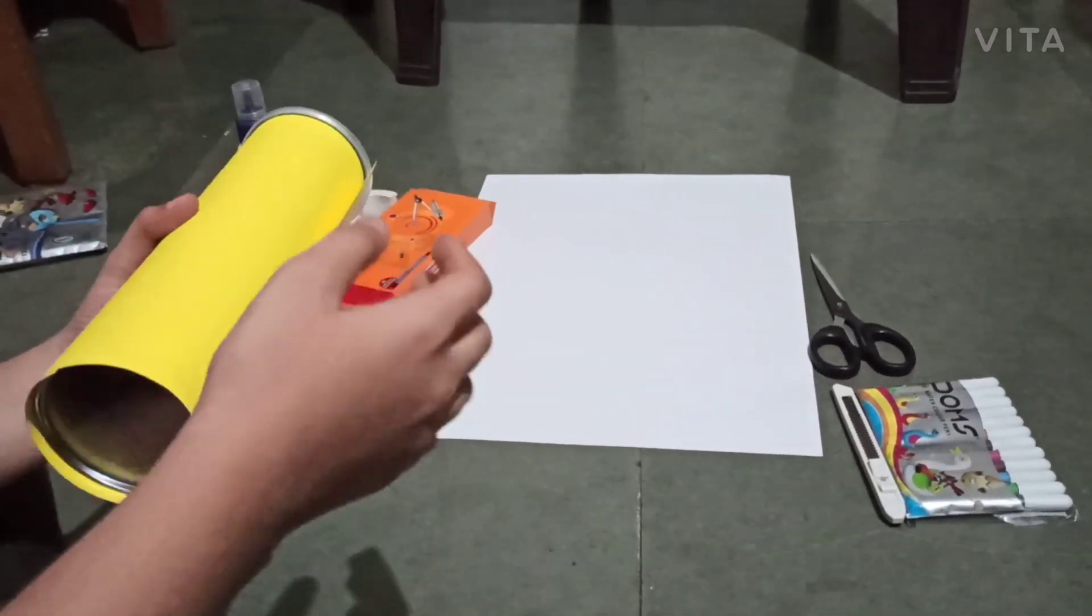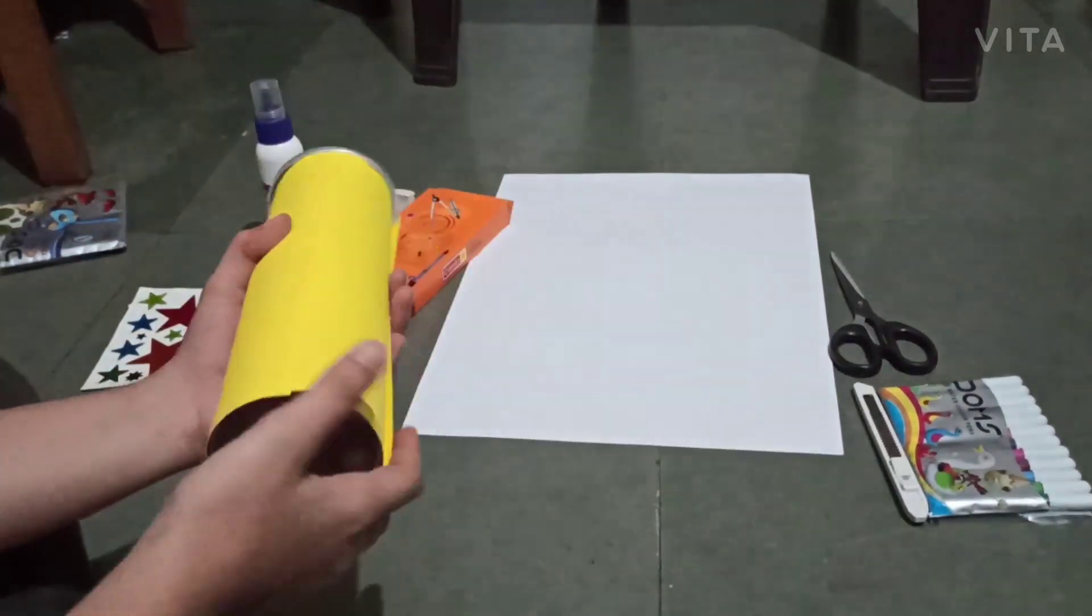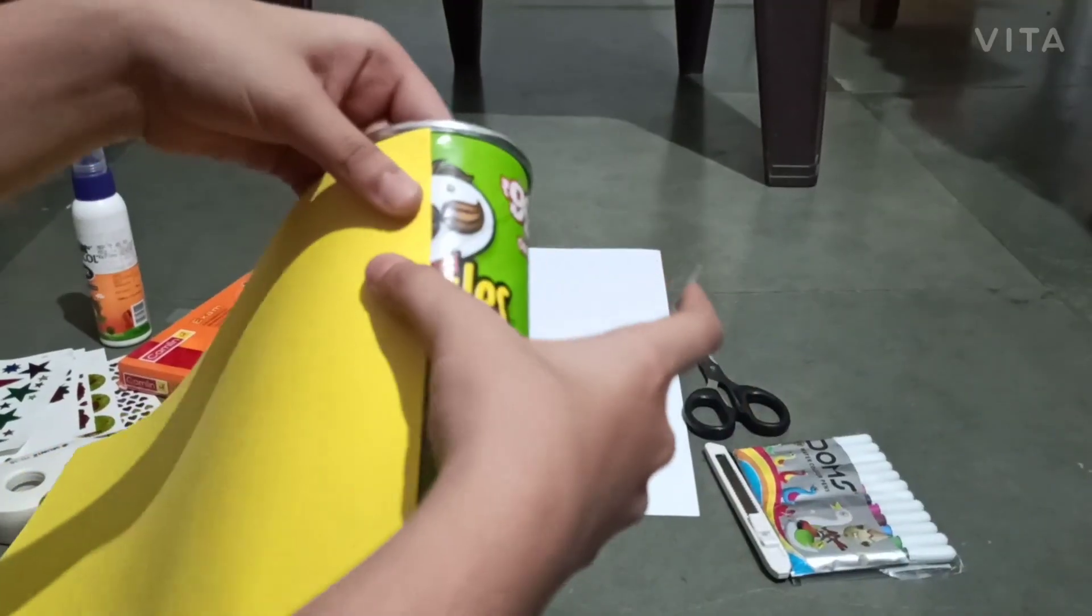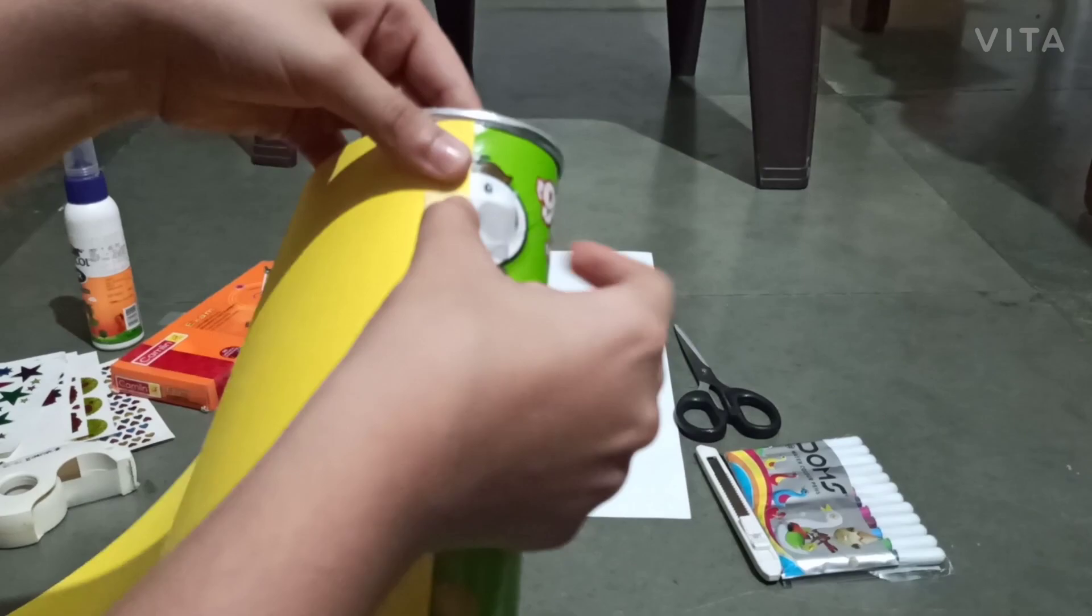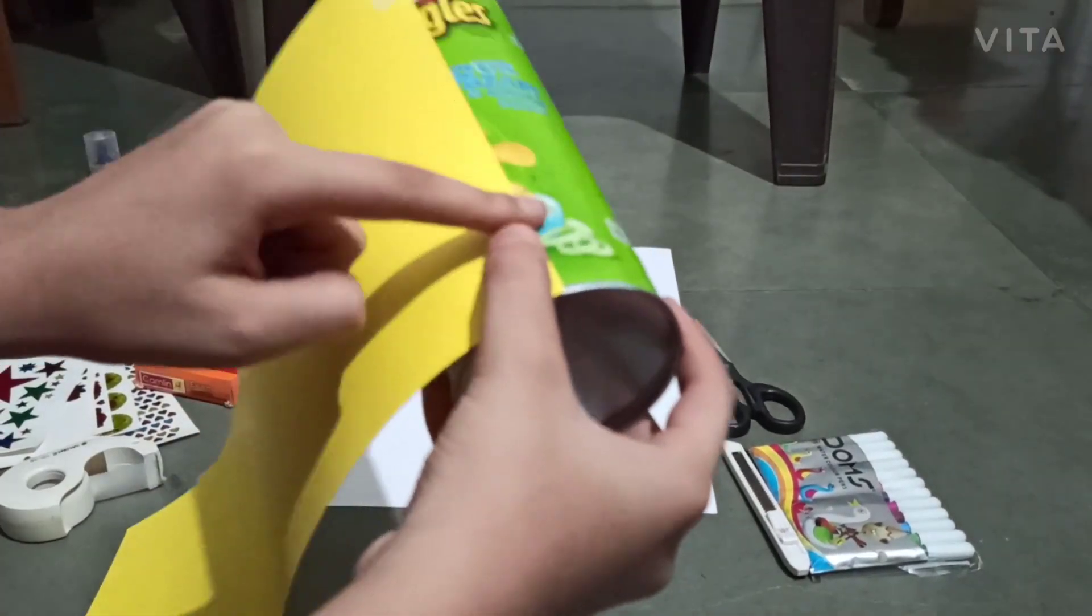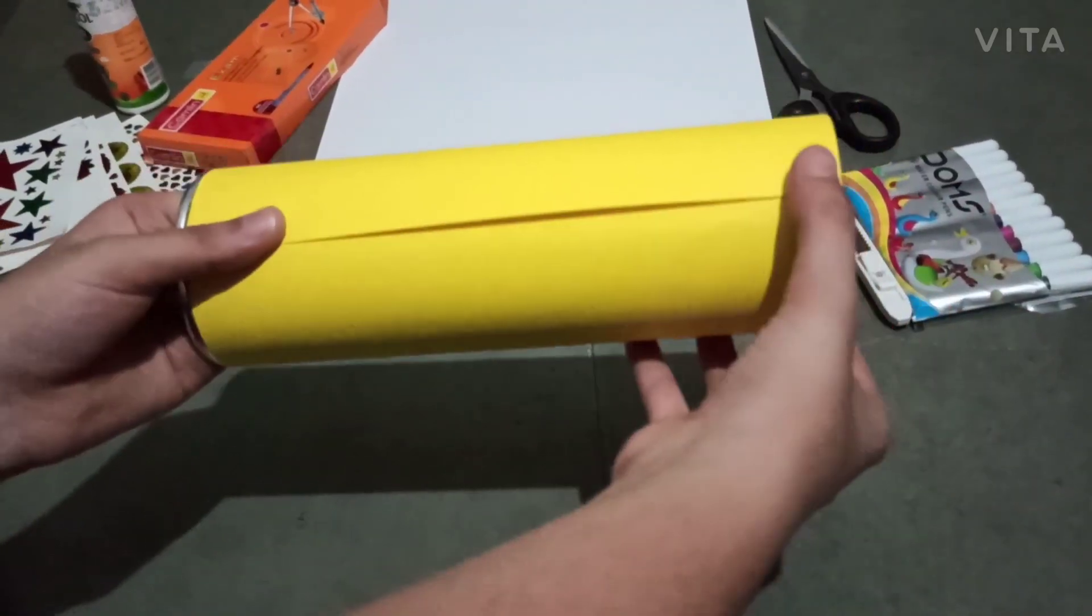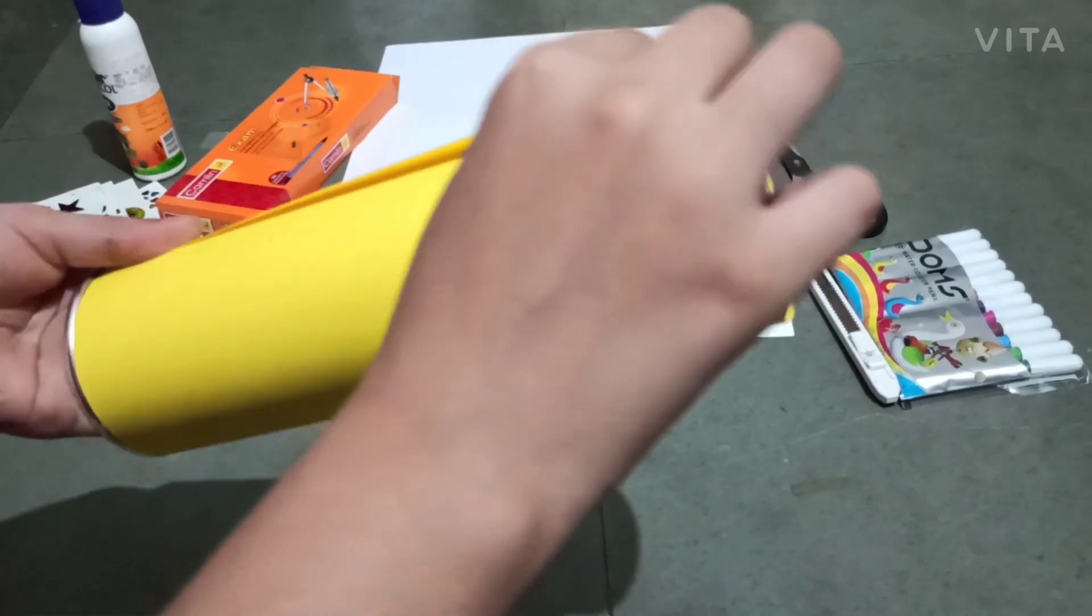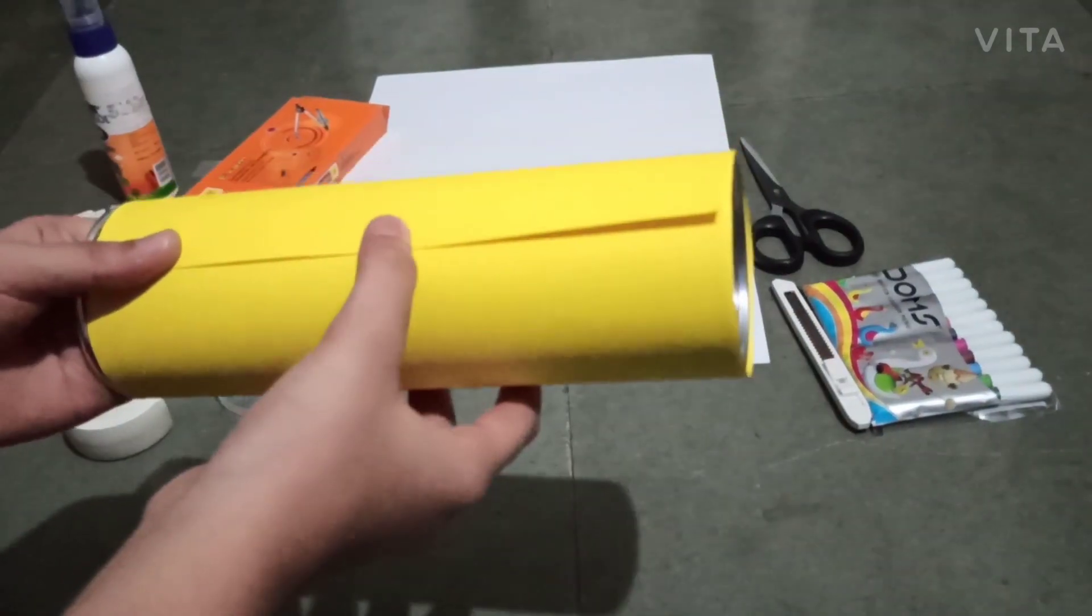For starting we have to put tape for support and put tapes on here also. Now I have rounded the container. Now you can put your glue or you can stick it with tape.